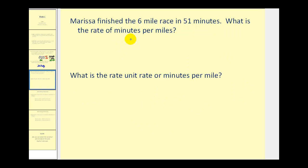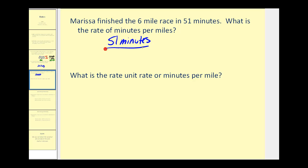Here's another example. Marissa finished the six-mile race in 51 minutes. What is the rate of minutes per mile? We're comparing minutes to miles, so the rate would be 51 minutes per six miles.